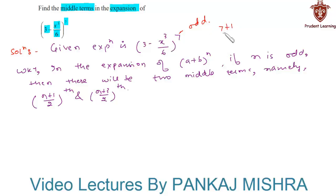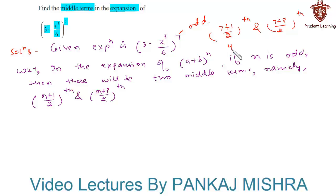The two middle terms are the (7 plus 1) upon 2th term and the (7 plus 3) upon 2th term. This gives us the 4th term and the 5th term. So in the expansion of this quantity, the two middle terms are the 4th and 5th terms.